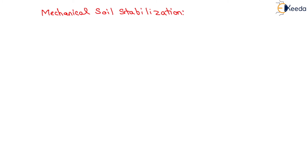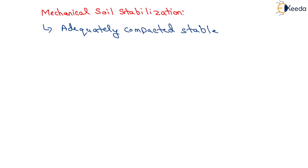Correctly proportioned materials — that is, aggregate and soils — when adequately compacted to get a mechanically stable layer, the method is called mechanical stabilization. Whenever we get an adequately compacted stable layer, that phenomenon is called mechanical stabilization.